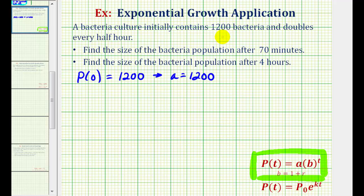We're also told that the bacteria doubles every half an hour. One consideration is that the time here is given in hours, but then we're asked to find the population size in minutes and then again in hours. So I think we'll write a function in terms of t, where t is equal to the number of minutes.